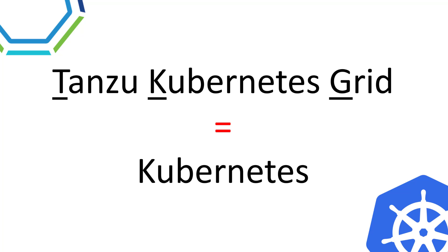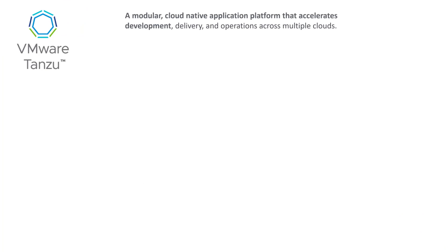We can break down TKG even further — be warned, it's going to get a little complex from here. There are different editions of Tanzu Kubernetes Grid. The most common one is vSphere with Tanzu, sometimes referred to as TKGS — meaning Services. This is the version integrated directly inside vCenter: by going to a menu inside vCenter you can enable and basically install Kubernetes into a vSphere cluster.